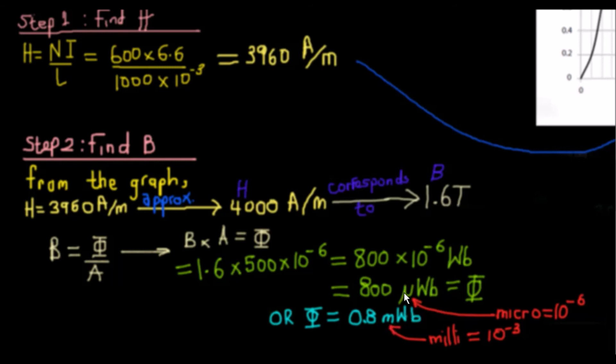10 to the power minus 6 is the same as micro, 10 to the power minus 3 is the same as milli. There's another video on how to convert milli, micro, nano and so on, so I hope this helps. Make up some more questions for yourself, and good luck in your examination.